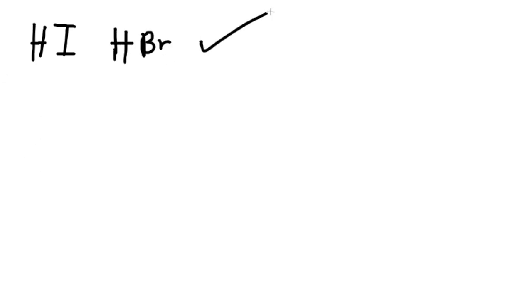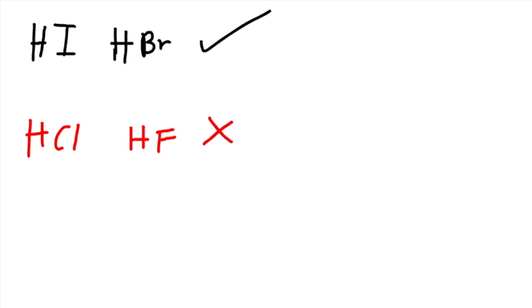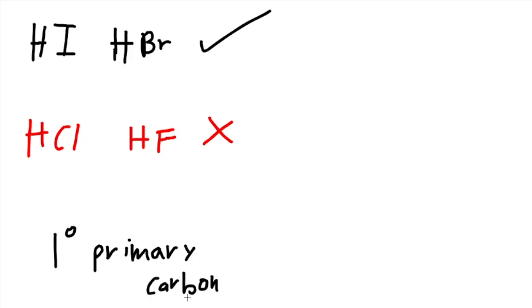For today's video, we will be talking about acidic cleavage for ethers. HI and HBr would be the only reactants that would work for this reaction. HCl and HF will not work. Also, the carbons need to be SP3 — SP2 will not work.